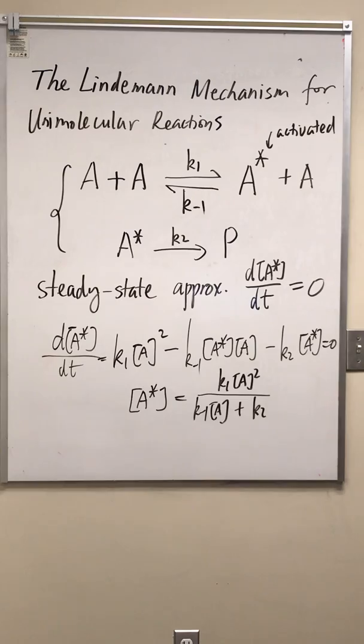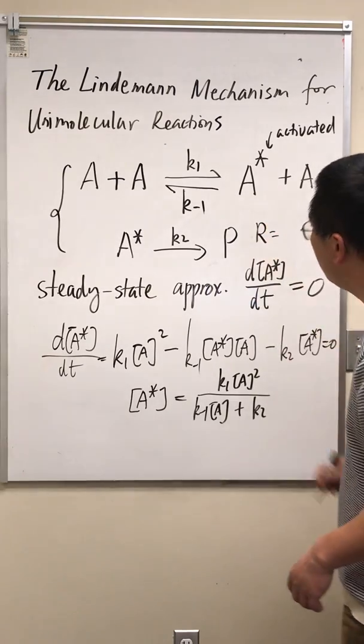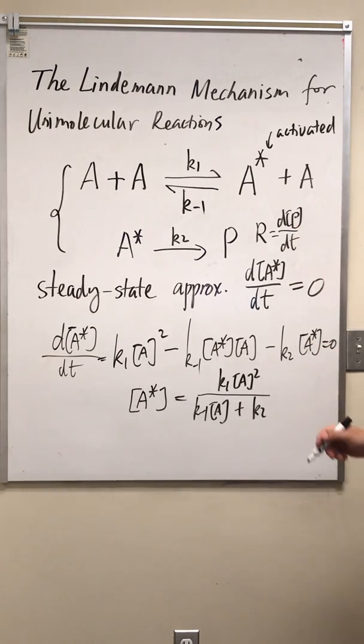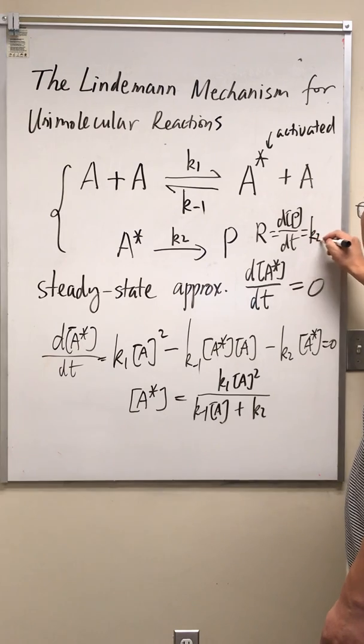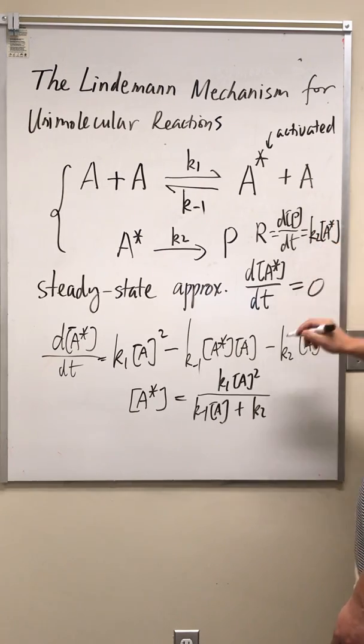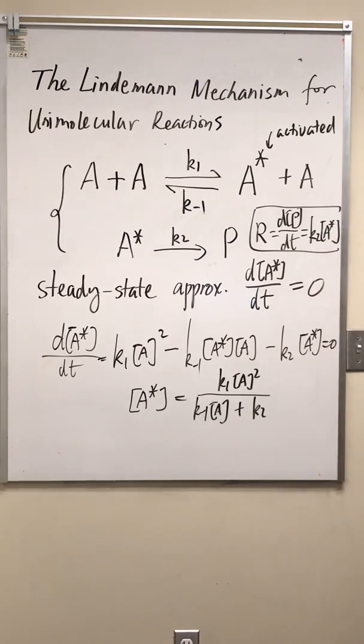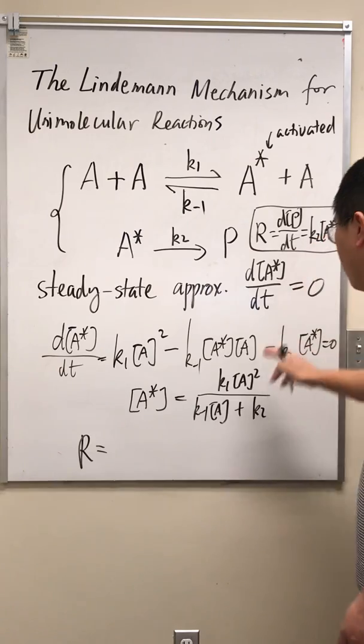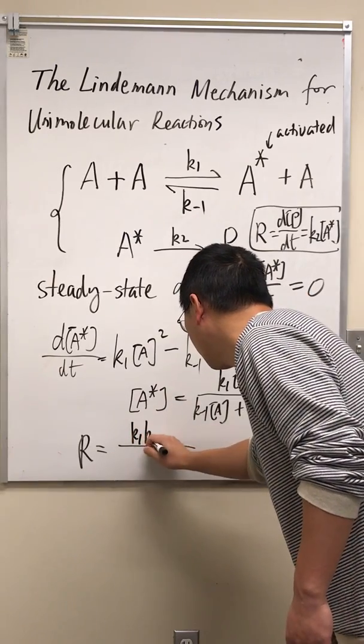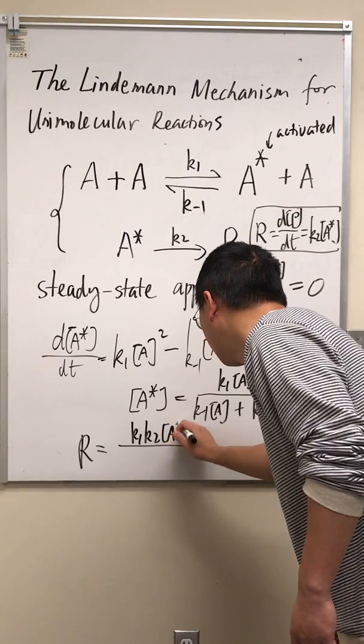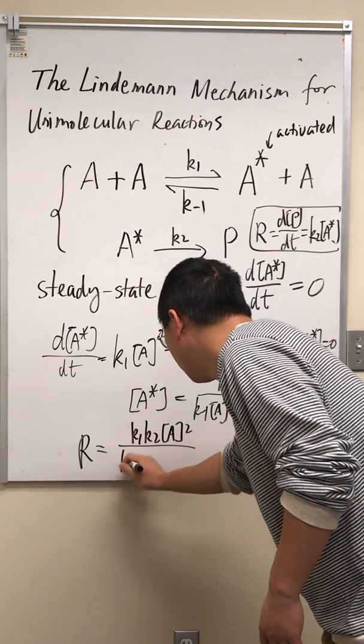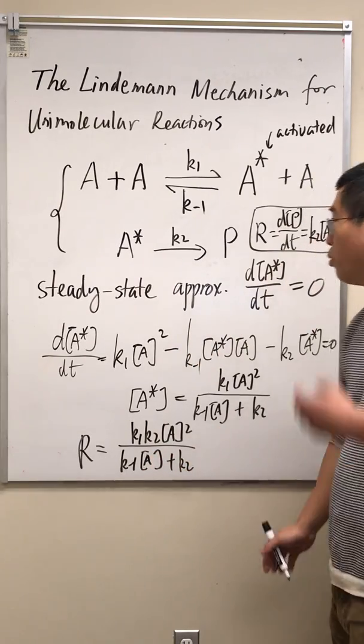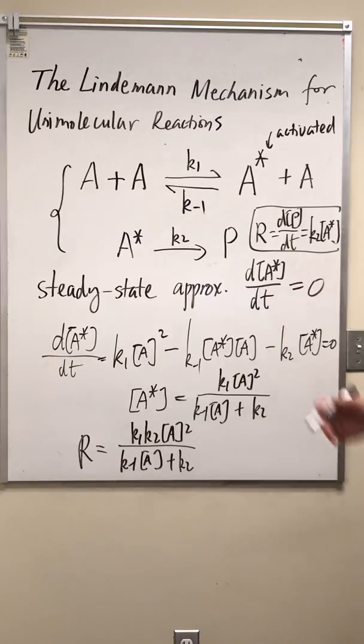And then we'll get the reaction rate. The reaction rate is simply how fast the product is being produced, dP/dt. So it's going to be K2 times A star. Alright, that's the reaction rate. So I'm going to put the reaction rate here. It's K2 times A star, so K1 K2 A squared over K minus 1 A plus K2. This is the rate law for the unimolecular reactions.